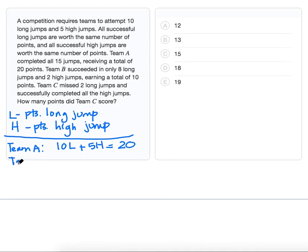For Team B, they only succeeded in eight long jumps and two high jumps, earning a total of 10 points. So that's going to give us the equation 8L plus 2H equals 10.